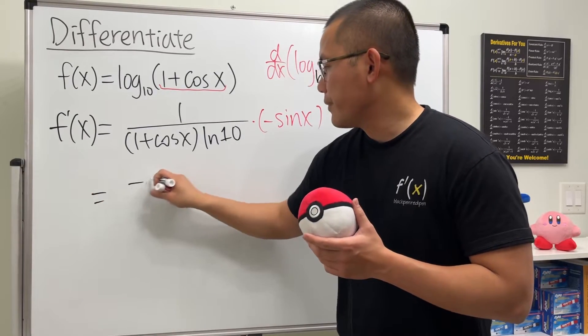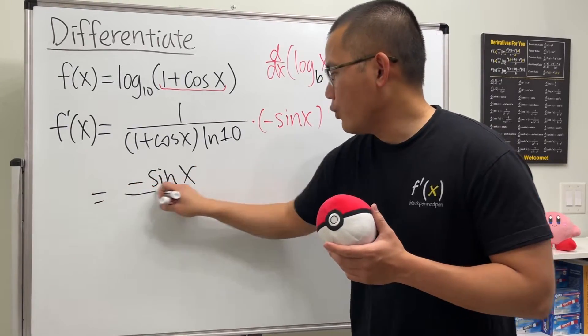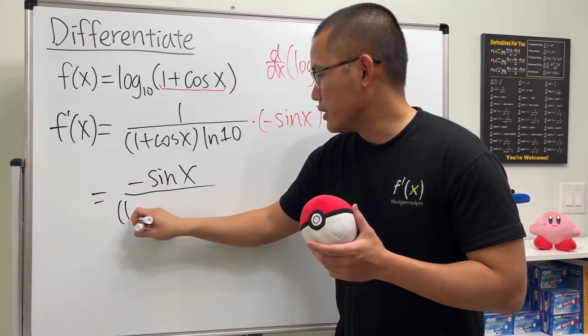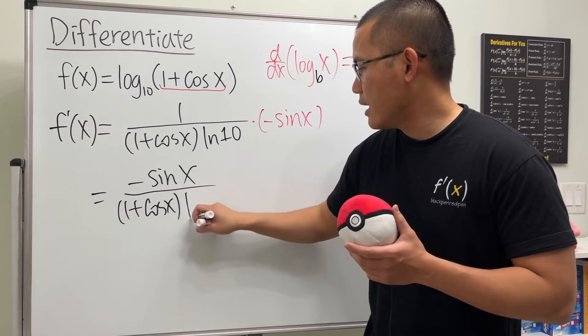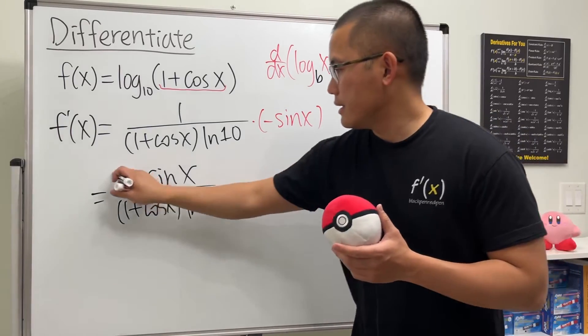We can put this on the top, so we'll just get negative sine x over 1 plus cosine x and then ln 10. This is it.